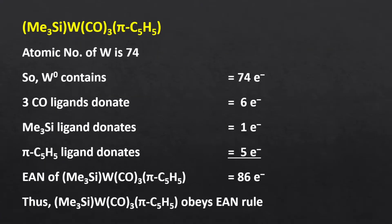The atomic number of tungsten is 74 and there is no charge on the complex, so the oxidation state of tungsten is 0 and tungsten will contribute 74 electrons. Trimethylsilyl is a 1 electron donor. Thus, 74 electrons from tungsten, 6 from 3 carbonyl ligands, 1 from trimethylsilyl, and 5 from pi-cyclopentadienyl. Consequently, the effective atomic number of this complex is 86, meaning the complex follows the effective atomic number rule and is stable.